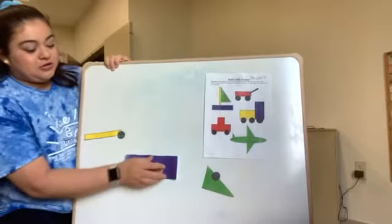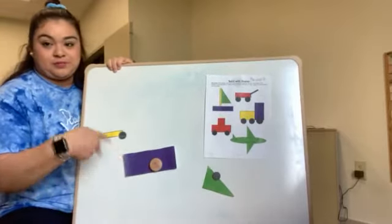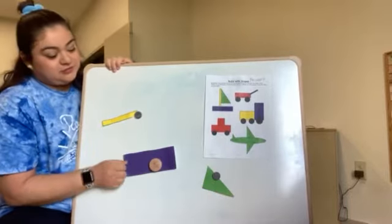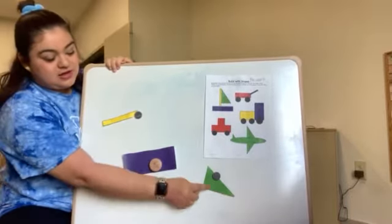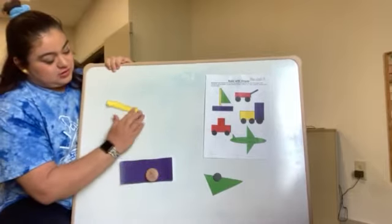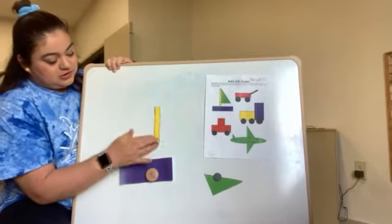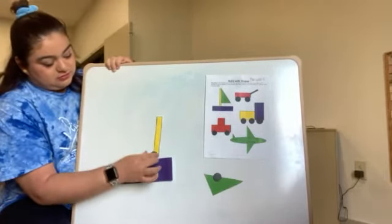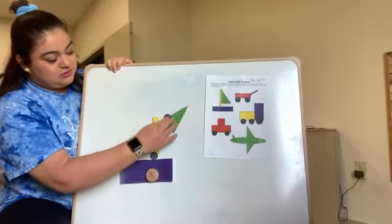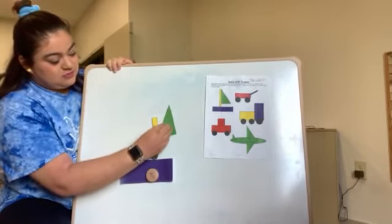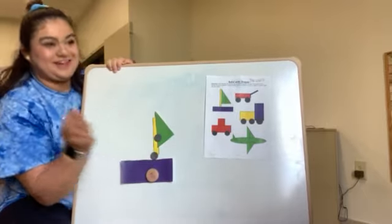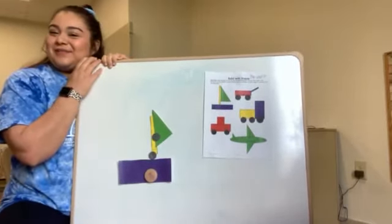I'm going to get the purple rectangle, the yellow rectangle, and a green triangle. I'll put the yellow rectangle right here and the green triangle there, and that's our sailboat.